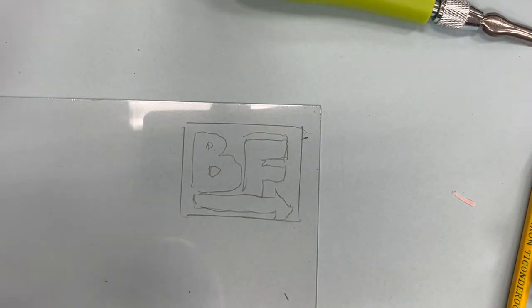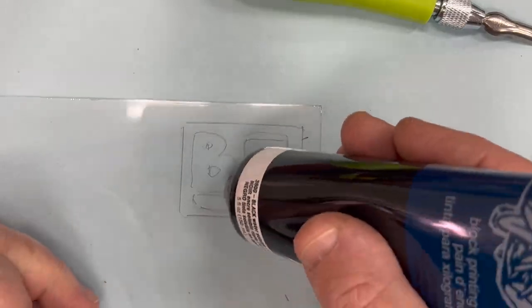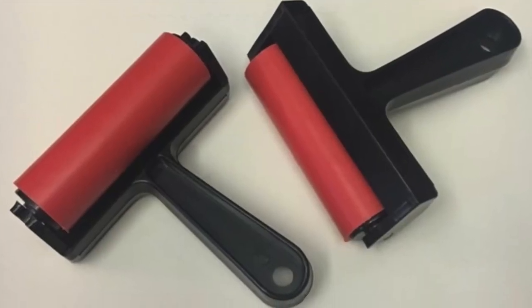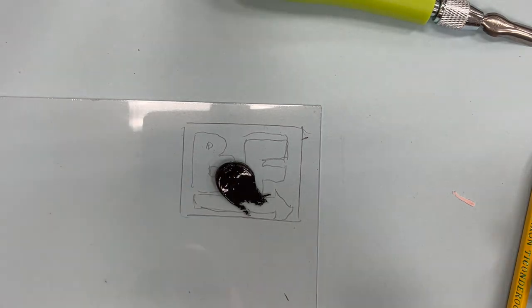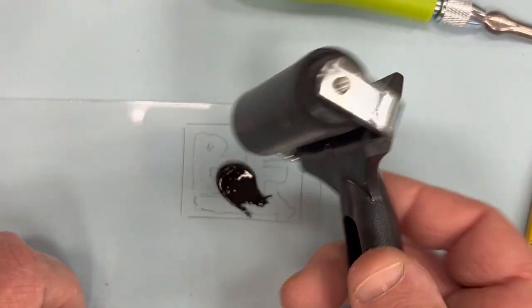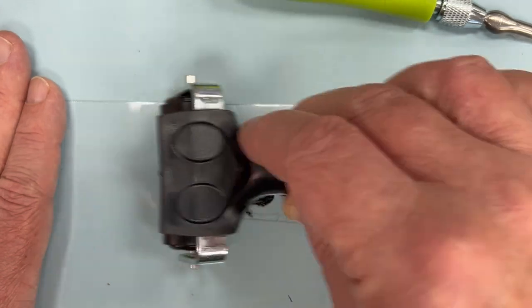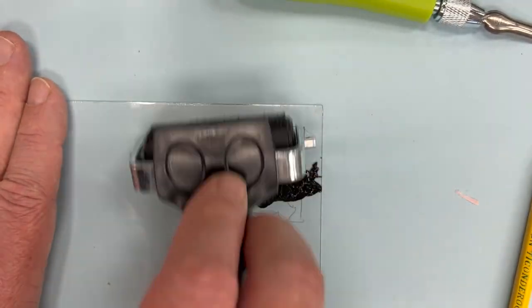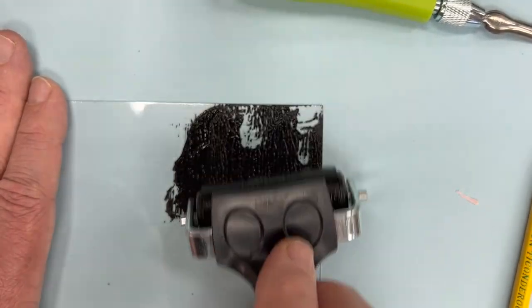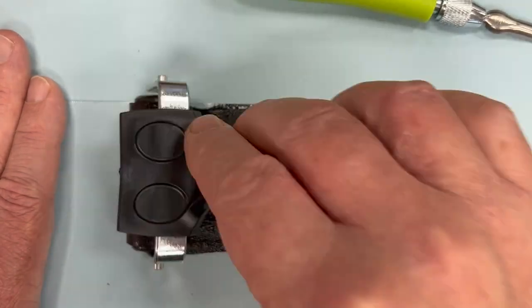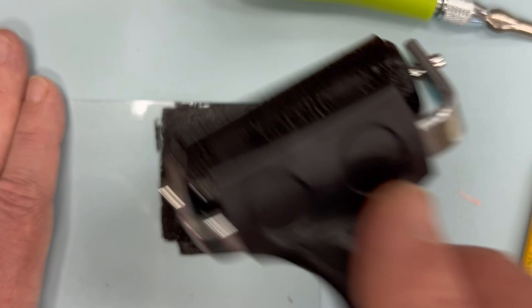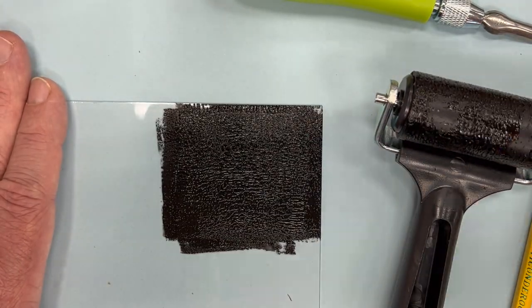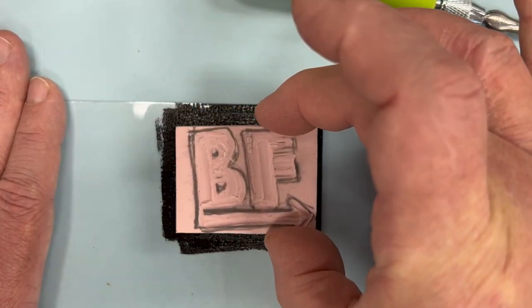If you use one of these rollers, called a brayer, make sure you roll on an area barely larger than the stamp itself. This will take very little ink. It's wasteful to roll an area a lot larger than the stamp.